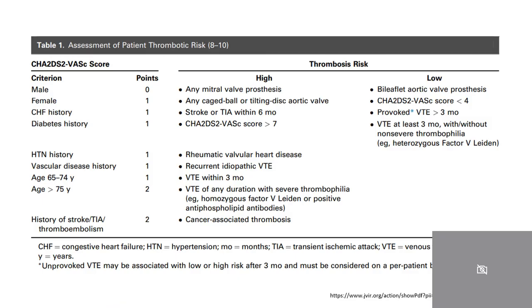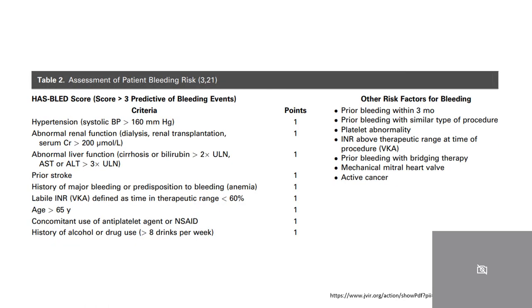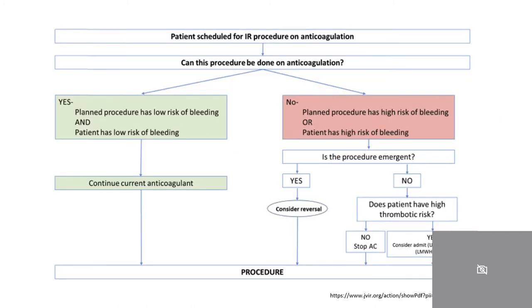So how do you decide whether a patient can come off of anticoagulation or antiplatelets? There are guidelines you can follow, but first you have to consider the patient's bleeding risk and thrombosis risk. The CHAD-VAS score is one tool: a score greater than 7 indicates significant thrombosis risk and a score less than 4 indicates low thrombosis risk. A score greater than 3 on the HAS-BLED score is predictive of significant bleeding events. Note that these are only guidelines and the actual clinical action plan varies from patient to patient. Using these risks, you can now consider if the procedure has a high or low risk of bleeding, based on the JVIR guidelines.